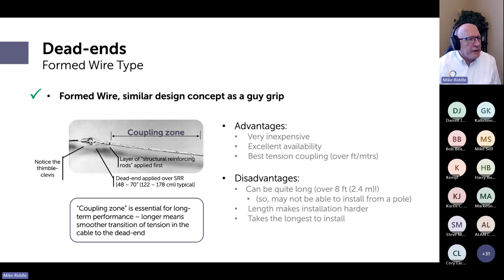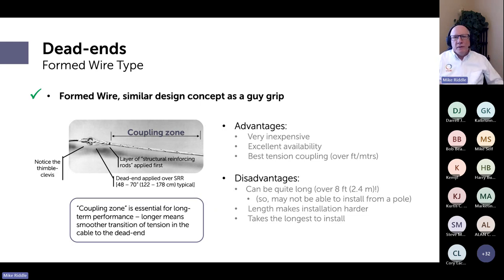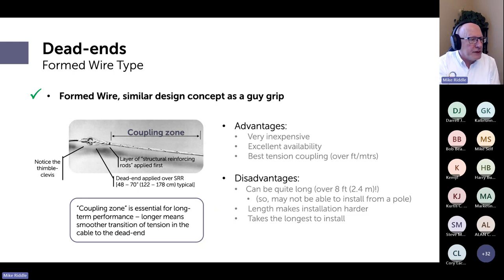This is a good point to introduce the concept of the coupling zone. Fundamentally, you have to get the tension in the cable coupled to the dead end, which is then connected to your structure. The distance over which the tension transitions from the cable to the dead end is called the coupling zone. You want it to be as long as possible, but in the real world you balance coupling zone length against ease of installation and practicality.